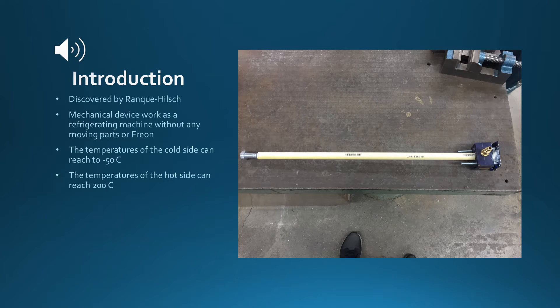The Vortex Tube was discovered by Ranque-Hilsch. It's a mechanical device that works as a cooling machine without Freon. The Vortex Tube can reach minus 50 Celsius on the cold side outlet and 200 Celsius on the hot side outlet.